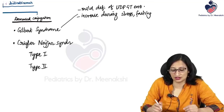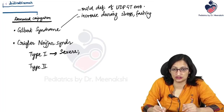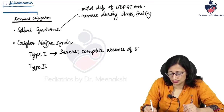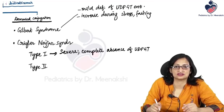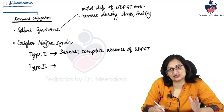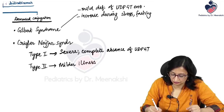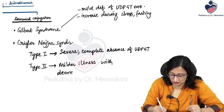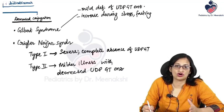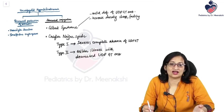Crigler-Najjar type 2 is a milder illness where there is decreased UDP glucuronyl transferase enzyme activity — some enzyme activity is still present. Type 2 usually has autosomal dominant inheritance with variable penetrance. These are some important disorders causing unconjugated hyperbilirubinemia in children.